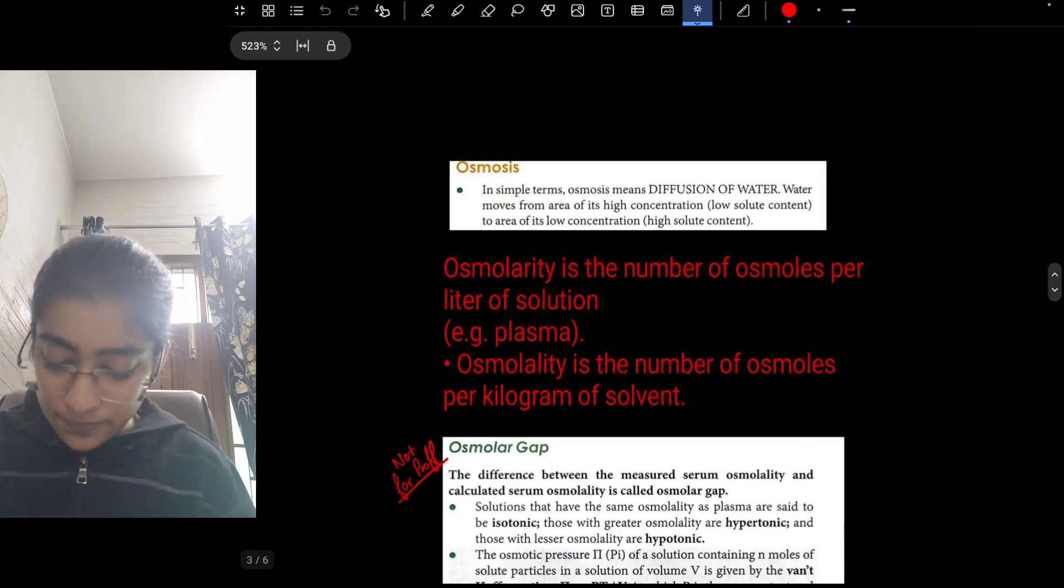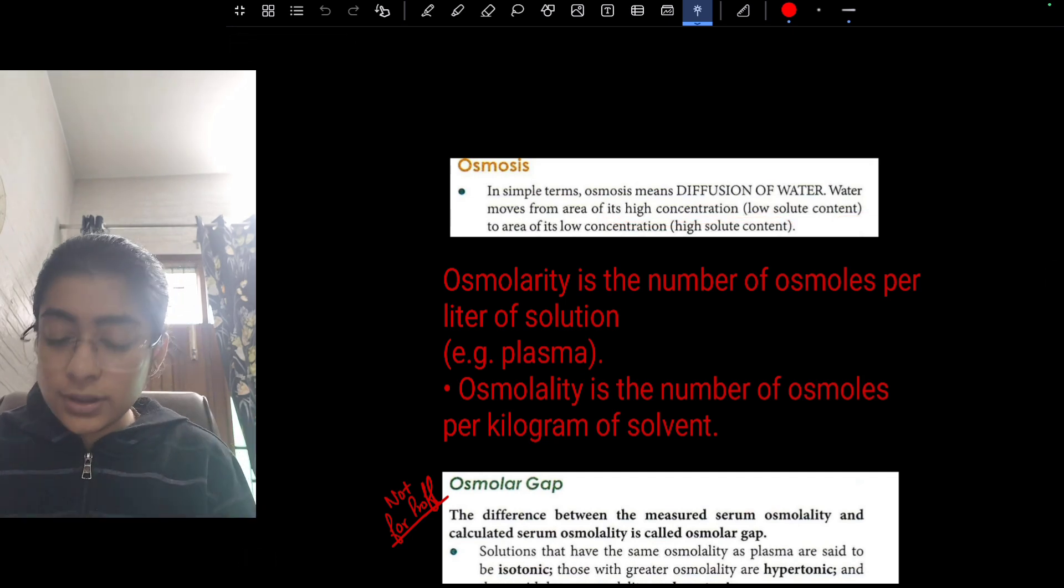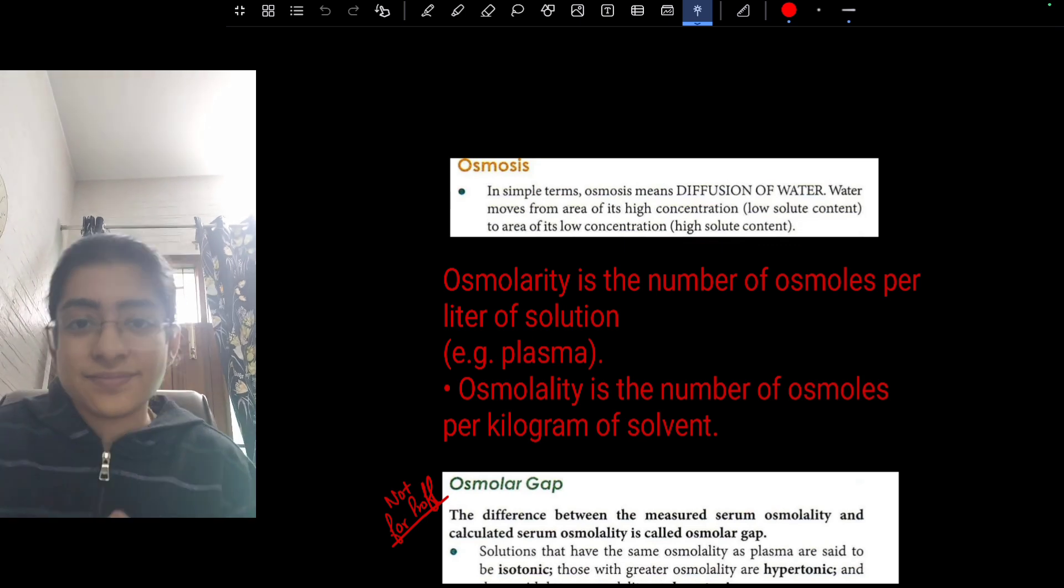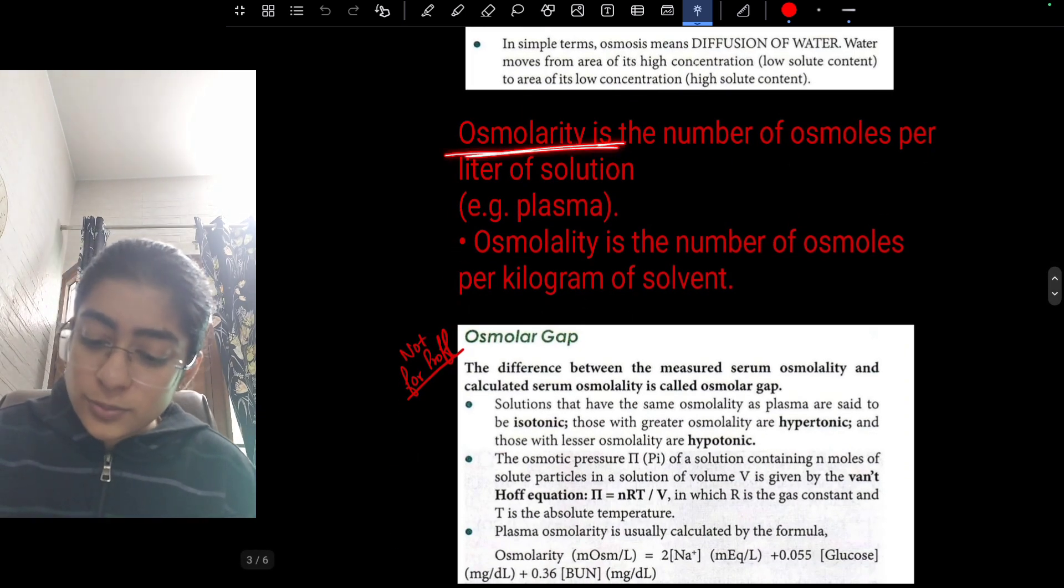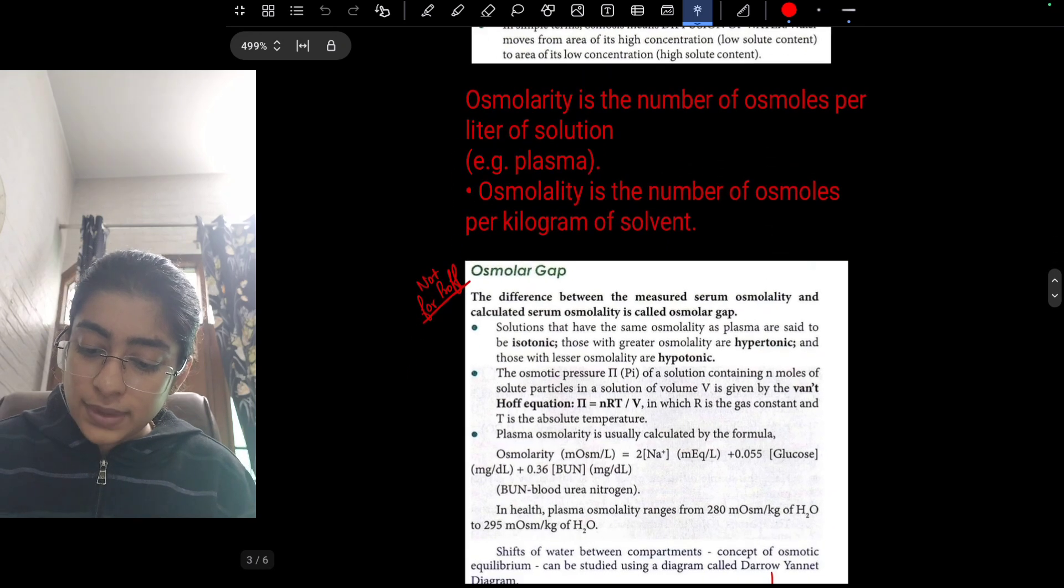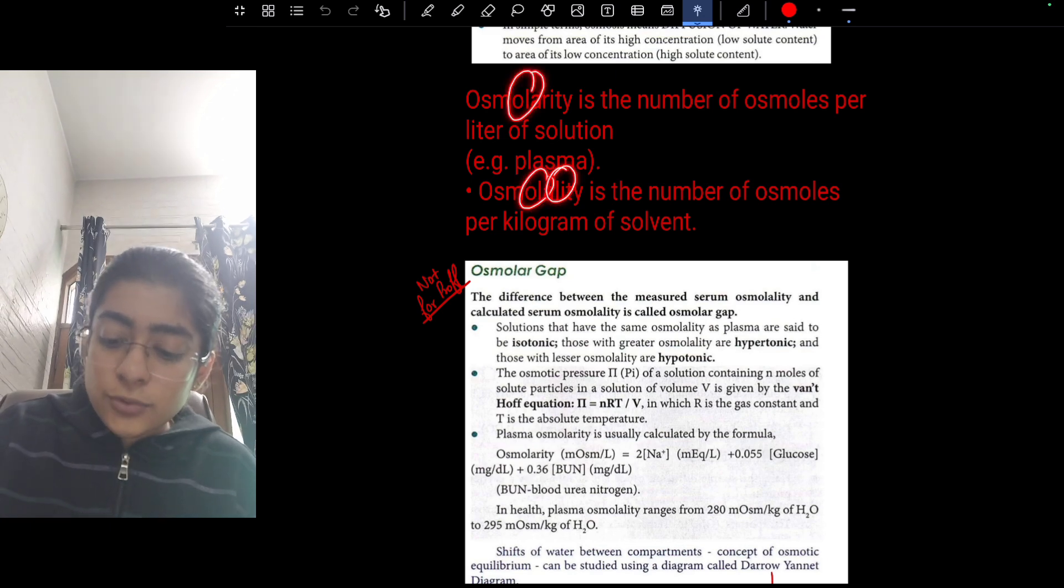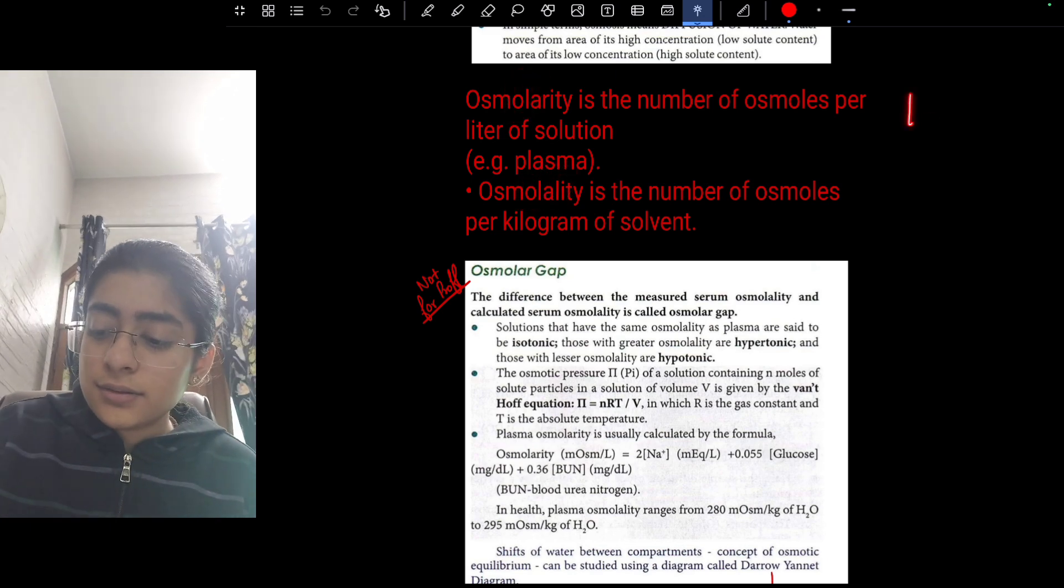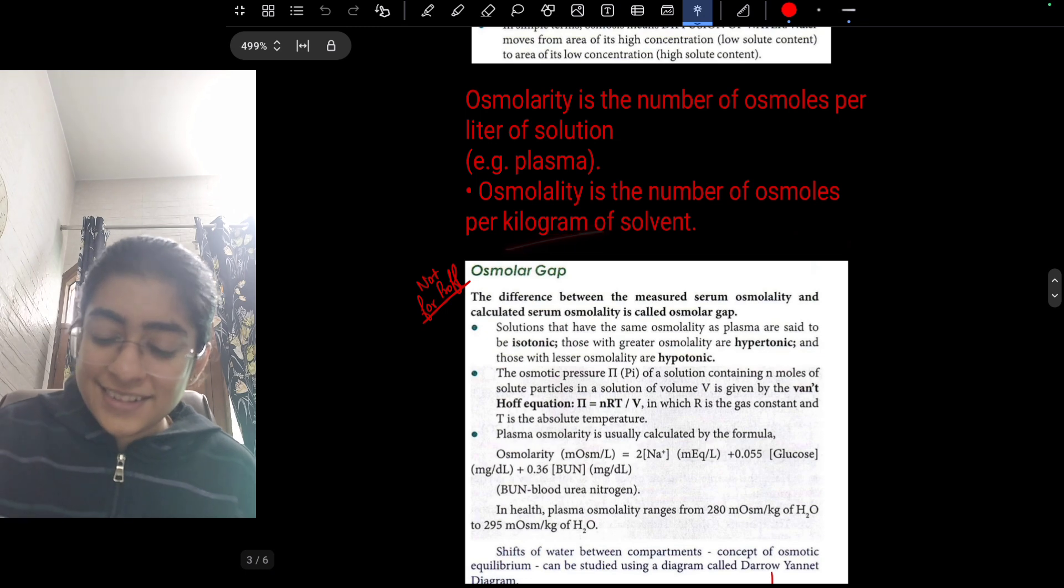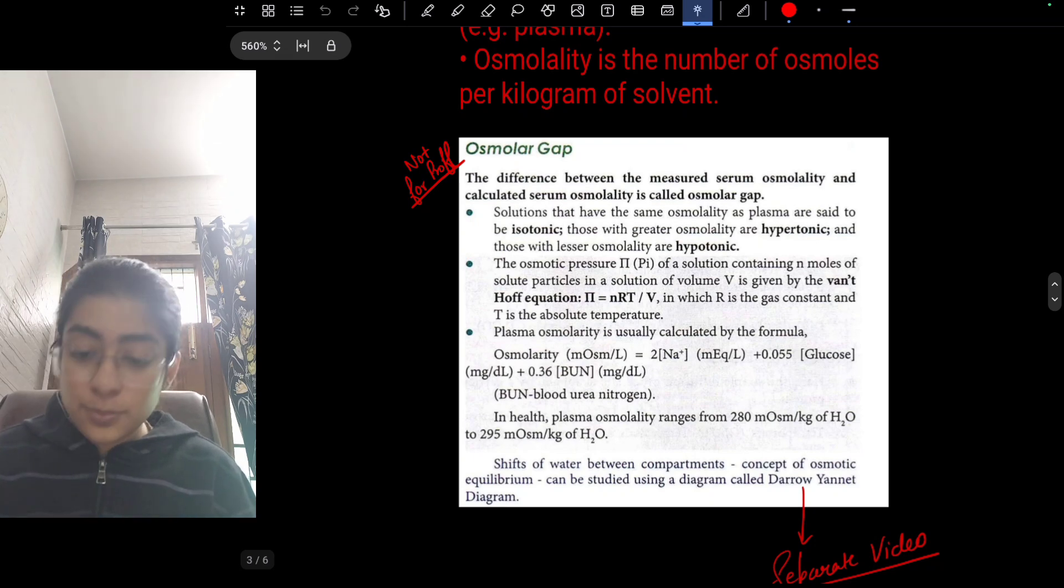Osmosis: diffusion of water from the area of high concentration, that is low solute content, to area of low concentration. The main point is you can write it in brackets because some people understand it the opposite way. Osmolarity and osmolality: osmolarity is per liter, one L. And osmolality, two Ls, we can say it is per kilogram. Just a memory tip and trick.